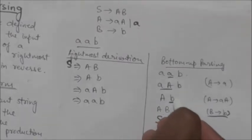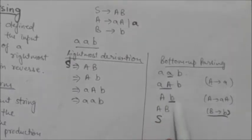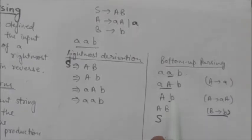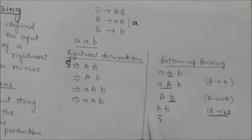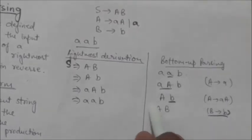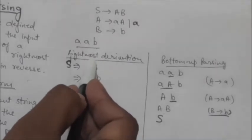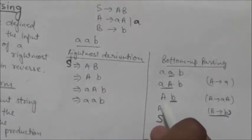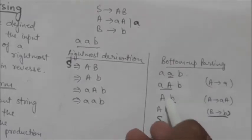So the substring aA is the handle of the right sentential form. Now we have the string Ab. In this string, consider the substring b — it appears at the right side of the production rule B → b. If we reduce this substring by the left side, non-terminal B replaces b, and we get the string aB, which exists one step before in the rightmost derivation of Ab.